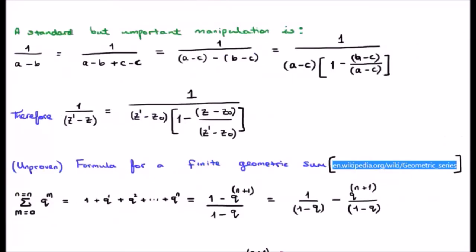How do we go about doing this particular power series expansion? The first thing we are going to do is a standard but important algebraic manipulation. We have 1 over A minus B. We introduce another variable C by adding and subtracting, and rearrange so that we have A minus C outside of 1 minus B minus C over A minus C.